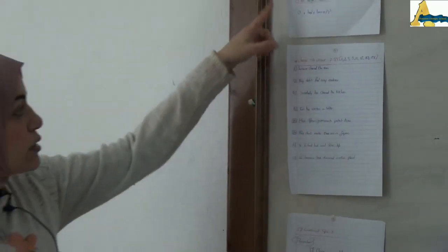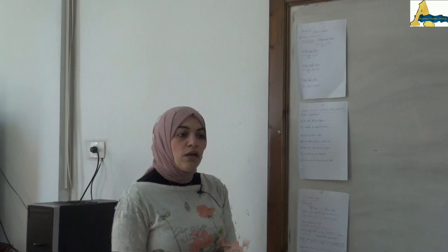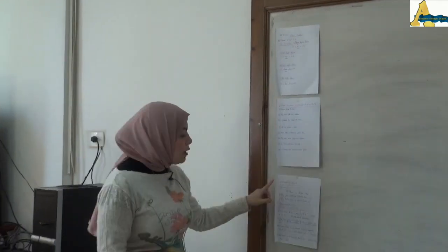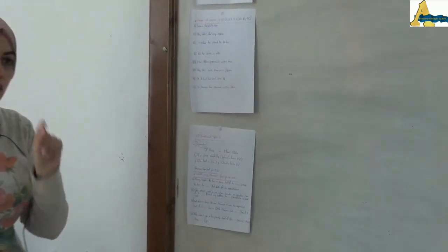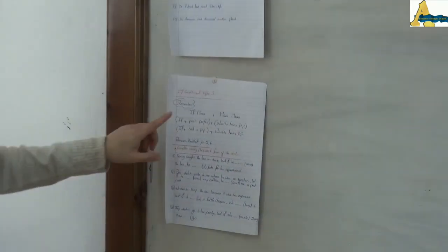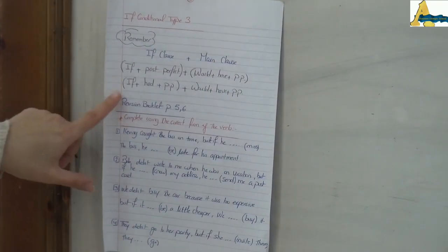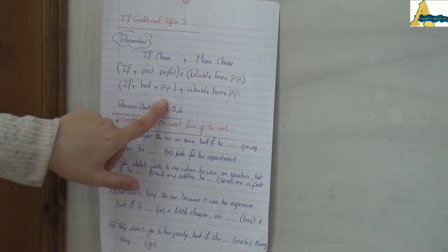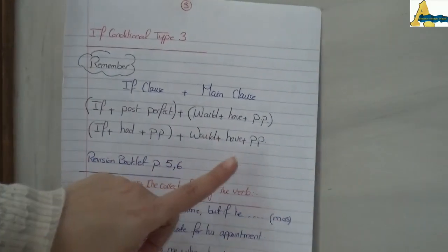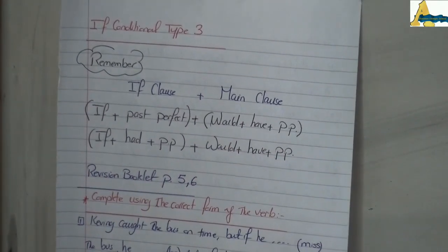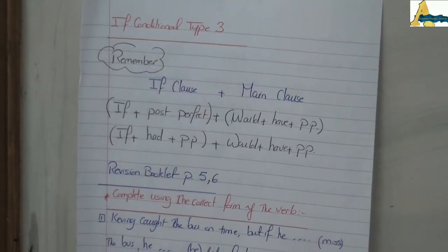Please revise the rules before answering. Then let us move to if conditional type 3. In order to answer, we have to revise the rule. It is if-clause plus main clause. So: if + had + past participle (past perfect), plus would + have + past participle of the verb. To illustrate, let us move to the exercise: complete using the correct form of the verb.